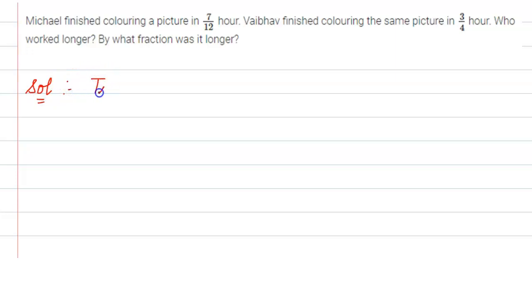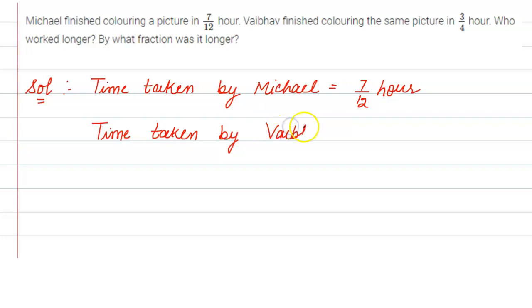First of all, write down the time taken by both. Time taken by Michael is 7/12 hour, and time taken by Vaibhav is 3/4 hour.